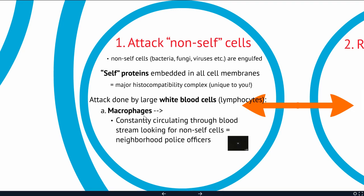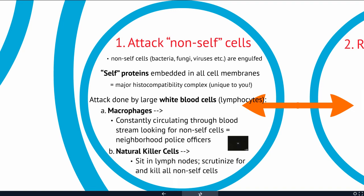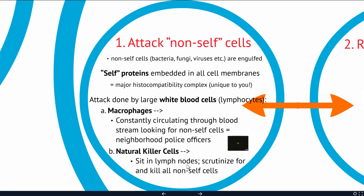'Macro' means big and 'phage' means to feed, so macrophages are the large feeding cells — they engulf any non-self cells and destroy them. We also have natural killer cells, which do the same thing — checking IDs and looking for non-self — but rather than moving through the bloodstream, they sit in the lymph nodes and check IDs, like setting up a checkpoint and pulling all cars over. Between these two, you can catch a lot of pathogens that end up in your body.